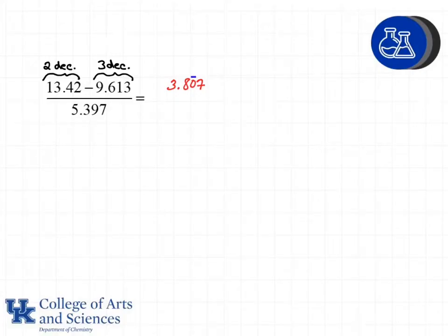We don't want to round at this point because if we round too many times in a problem it can get us outside the range of correct answers. So I'm simply going to mark that zero with a little line to indicate that that is the last digit which I can actually count when I'm looking at significant figures.